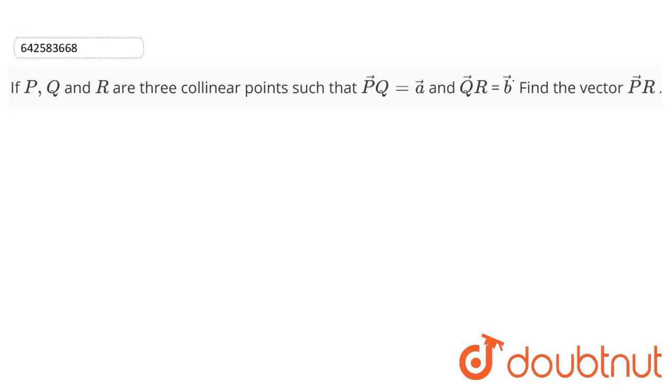In this question, it is given that if P, Q, and R are three collinear points such that PQ vector equals a vector and QR vector equals b vector, we have to find PR vector.